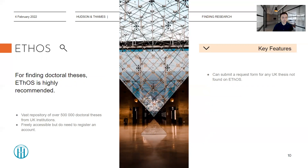Another great tool for finding research papers is EThOS. EThOS is a vast online repository of over 500,000 doctoral theses, though do note that this is only from UK institutions. It is freely accessible to the public, but you do need to register an account. A nice feature of EThOS is that if you remember a doctoral thesis from a UK institution that you read perhaps years ago but are struggling to find online, you can submit a request form to EThOS and they will try to find it, and if they do, they will upload it to their repository.